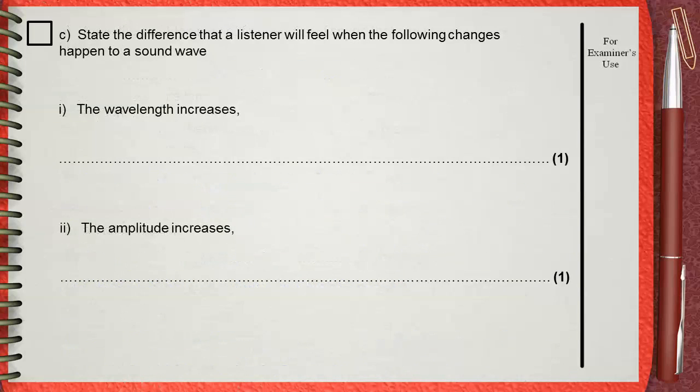state the difference that a listener will feel when the following changes happen to a sound wave. Number 1, when the wavelength increases. Number 2, when the amplitude increases.